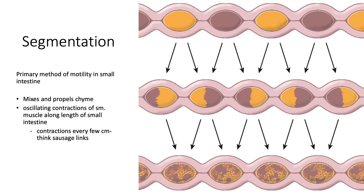The main type of motility in the small intestine is segmentation. Segmentation both mixes the contents within the lumen — churning it up with digestive enzymes, acids, and secretions — as well as propels that chyme toward the ileum. This works through oscillating contractions of smooth muscle along the length of the small intestine, pinching off little areas like sausage rings and contracting in the center to propel contents both forwards and backwards, mixing them together.